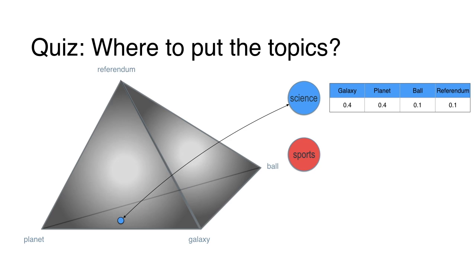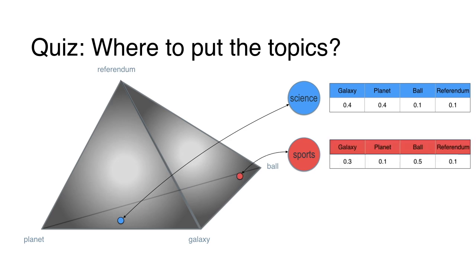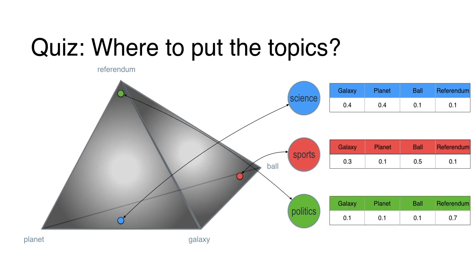Where would you put sports? I'd put it close to ball and somewhat close to galaxy because of the LA Galaxy — so 50% ball, 30% galaxy, 10% planet, and 10% referendum. And politics would go very close to referendum: 70% referendum and 10% each of the other three. If you thought of different things, that's completely okay — this is just how I see it.